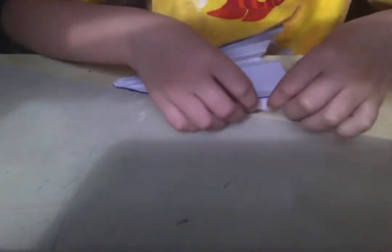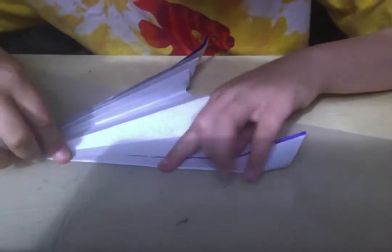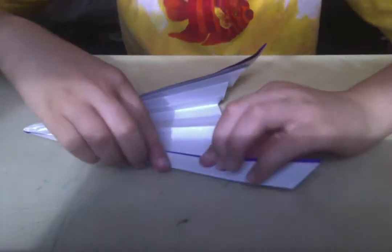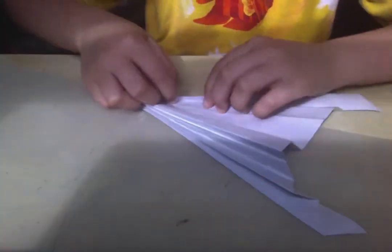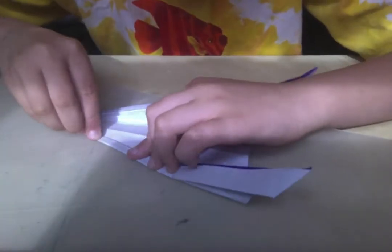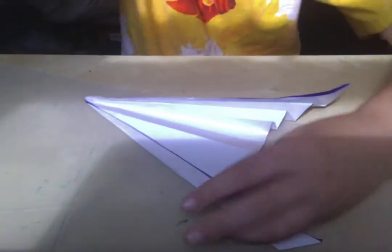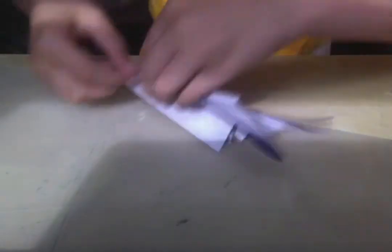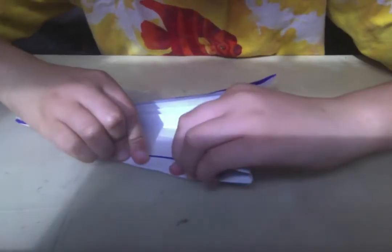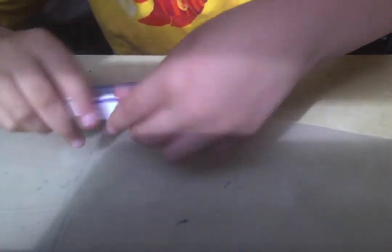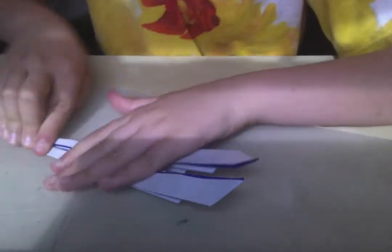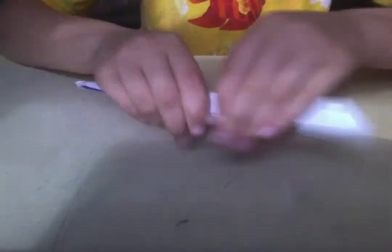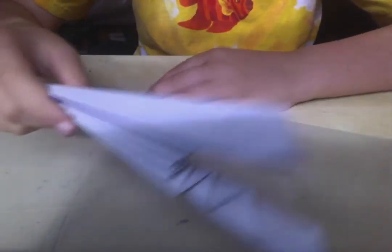And repeat on the other side. I'm going to turn it over and then valley fold it next. So we should have this sort of like a paper fan.